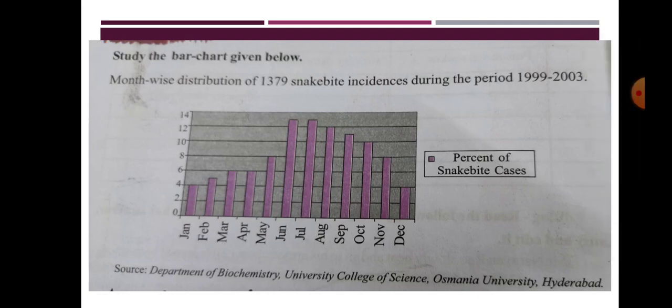A bar chart is a chart that presents categorical data with rectangular bars with height or length proportional to the values that they represent.